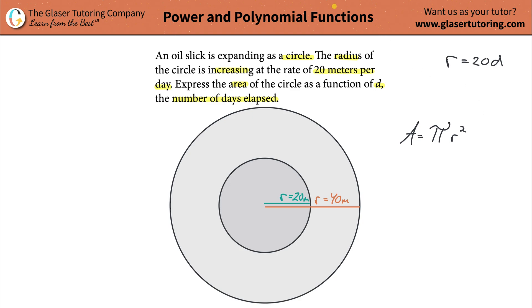But what I'm going to do now is, once I have this nice little relationship set, I'm going to take that value 20d and plug it in for r, because they are equivalent. So now it's going to be A is equal to pi multiplied by 20d squared.